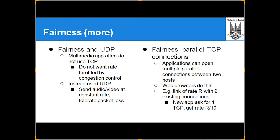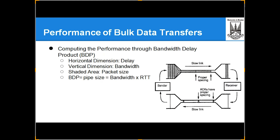TCP fairness and UDP: multimedia applications often do not use TCP because they do not want rate throttled by congestion control. For multimedia you need a continuous flow — you cannot wait for retransmission. So they use UDP, sending audio/video at a constant rate and tolerating packet loss. Any streaming can tolerate packet loss but not congestion. Parallel TCP connections: applications can open multiple parallel connections between two hosts; web browsers do this.